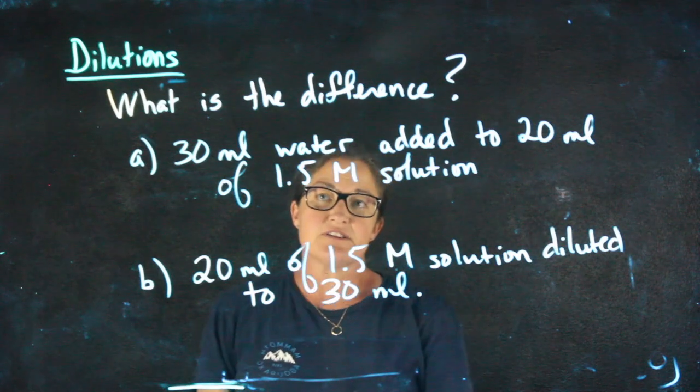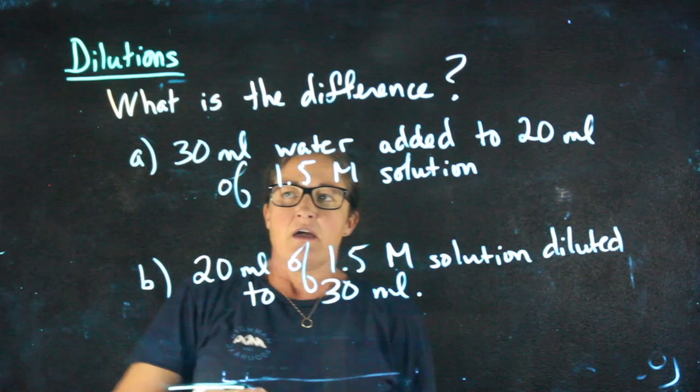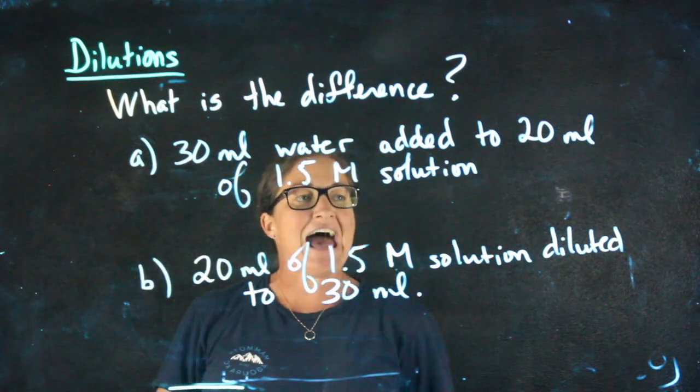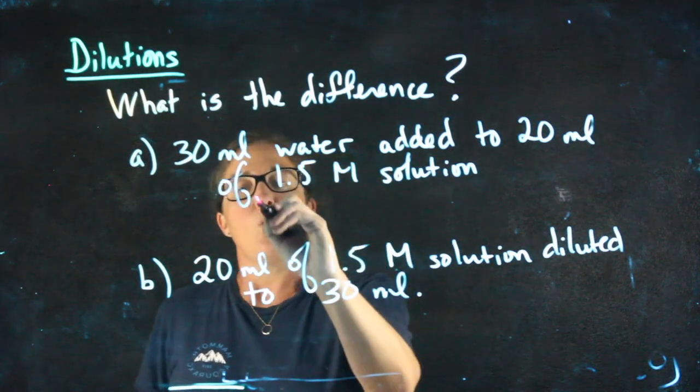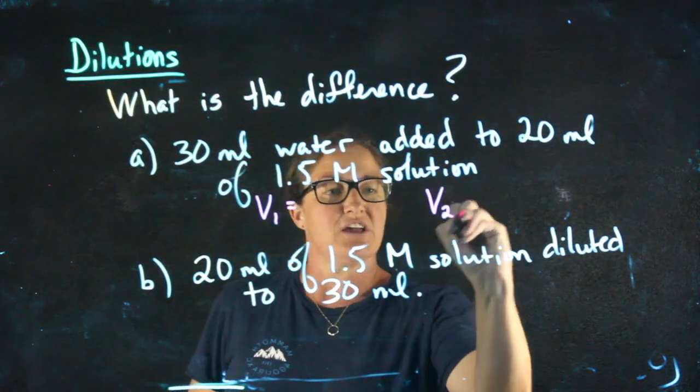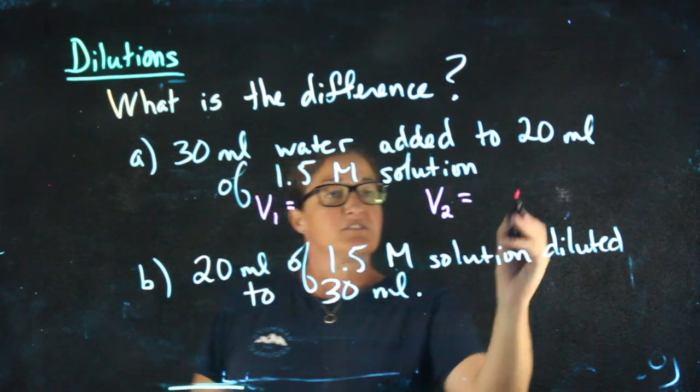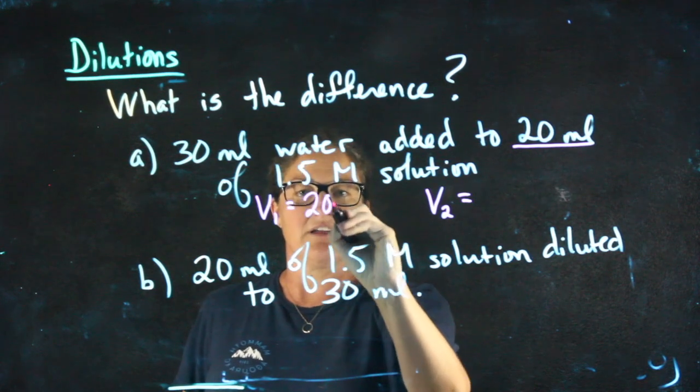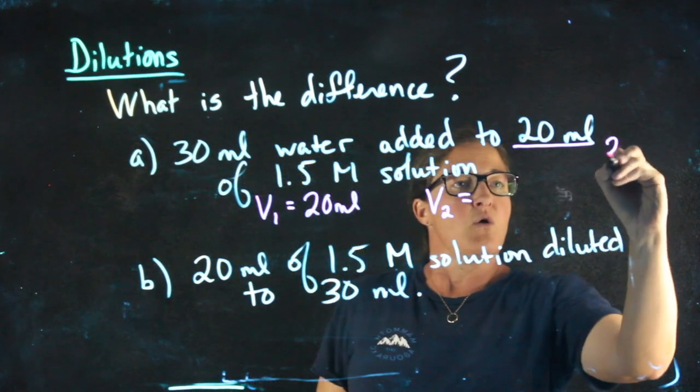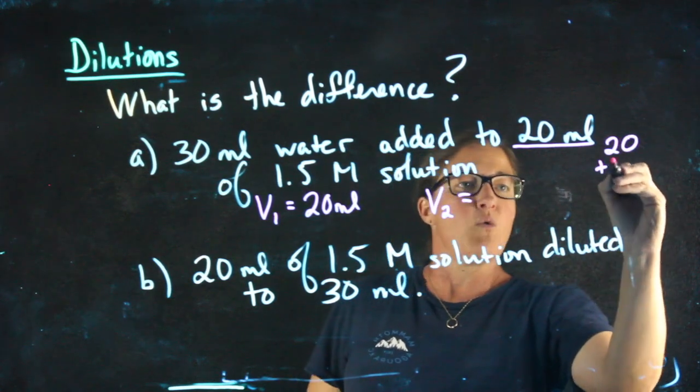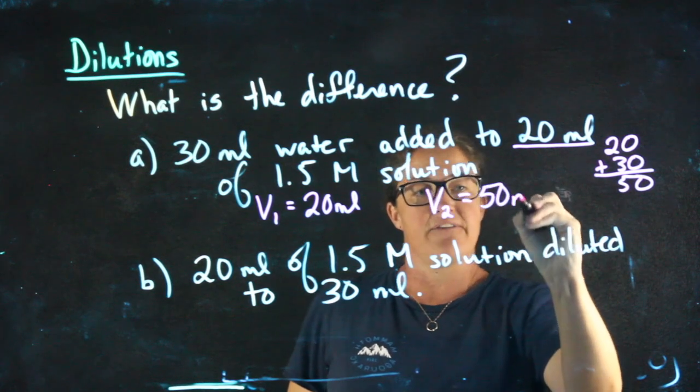To elaborate on the difference in wording that you can see between certain questions, we wrote out two examples here for you. In the first case, 30 milliliters of water is added to 20 milliliters of 1.5 molar solution. What should I use for V1 and what should I use for V2 for this problem? The solution that I'm starting with is the 20 milliliters, and then I added water to it. In this case, we took 20, we added 30 to it, giving us a final volume of 50 milliliters.